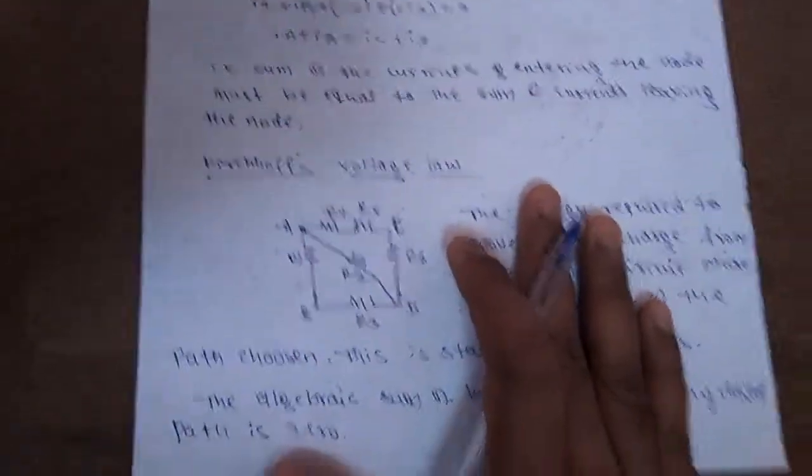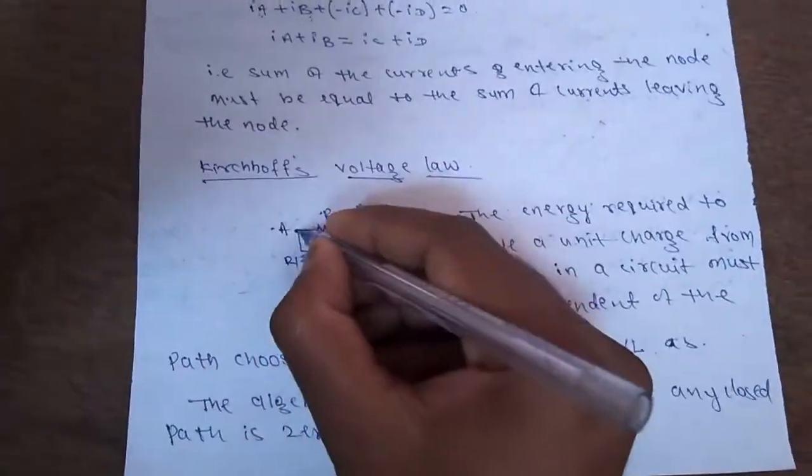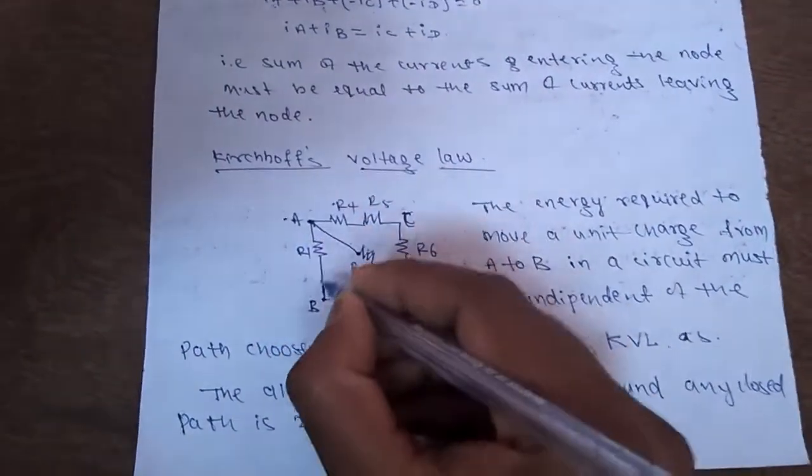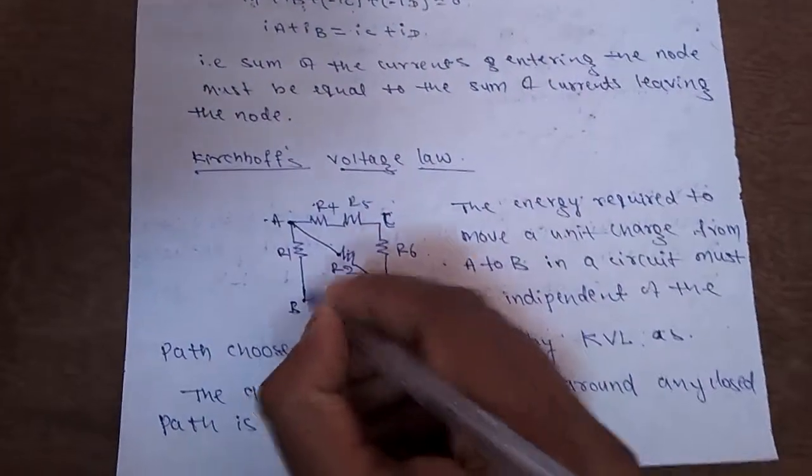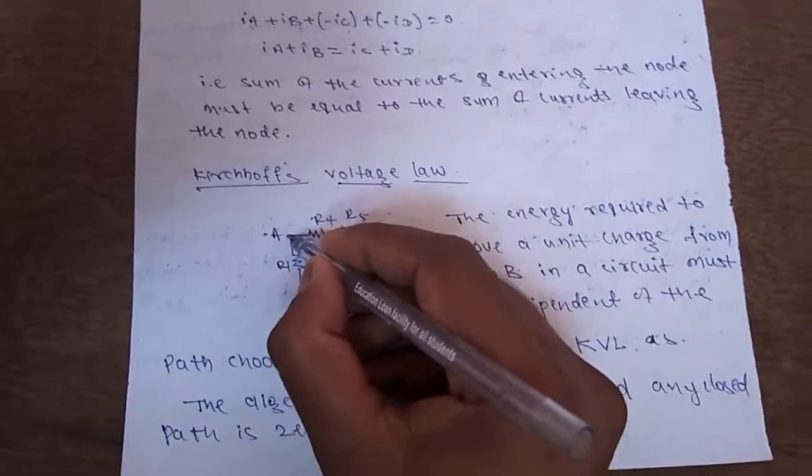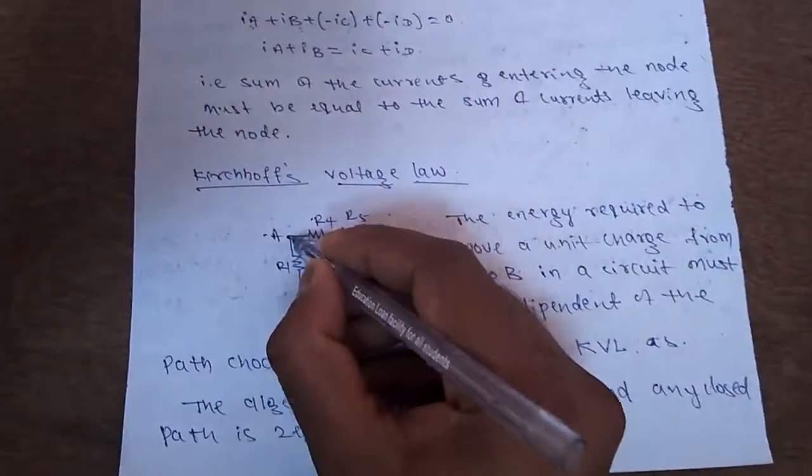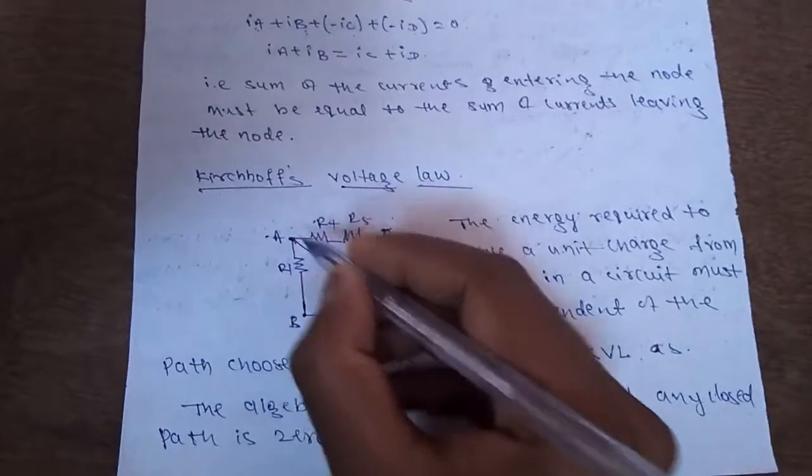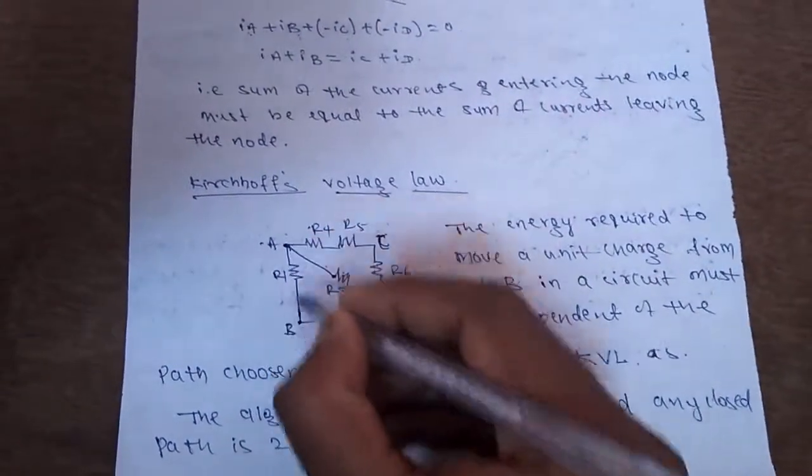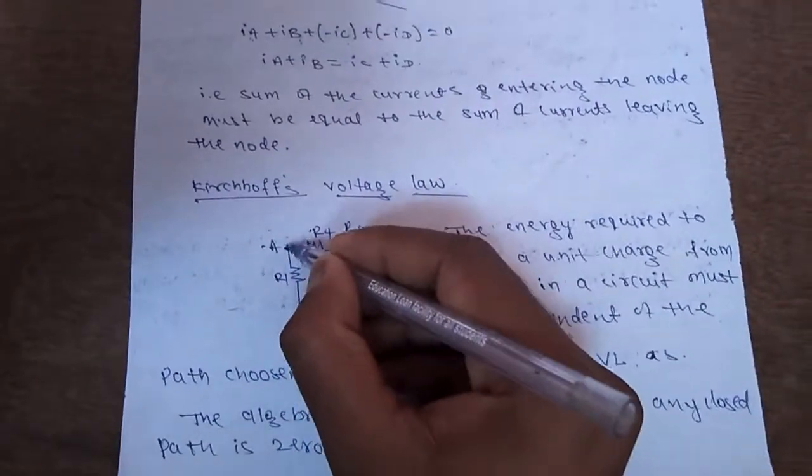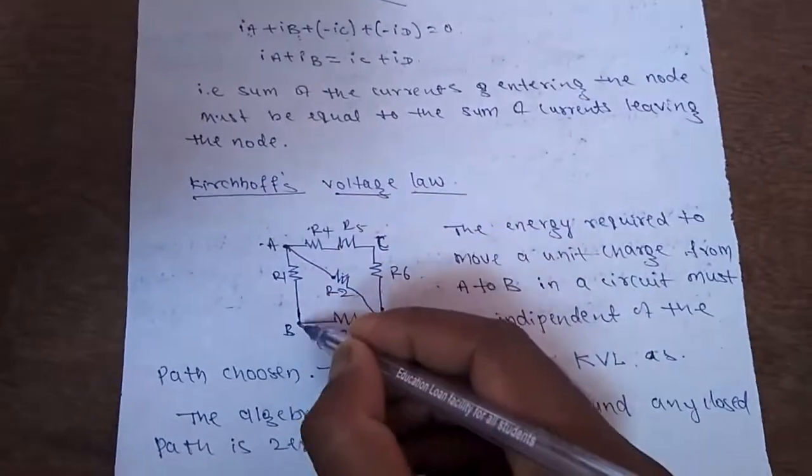And now we will apply Kirchhoff's voltage law. What is Kirchhoff's voltage law? In defining the potential difference between two points, I stated that potential difference between any two points is defined as the amount of energy required to move a unit charge from one point to another point. Here if you consider the potential difference between AB, is the amount of energy required to move a point charge from A to B.